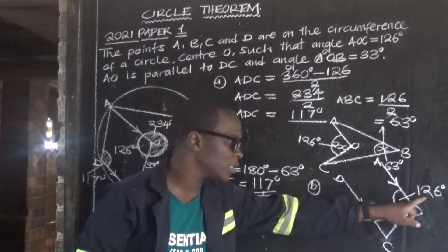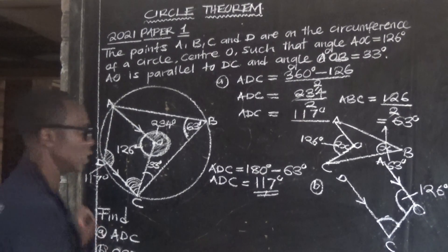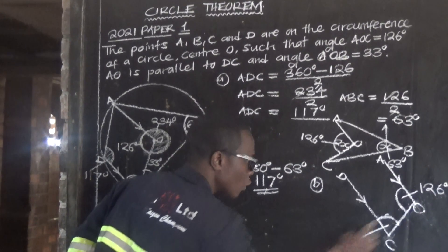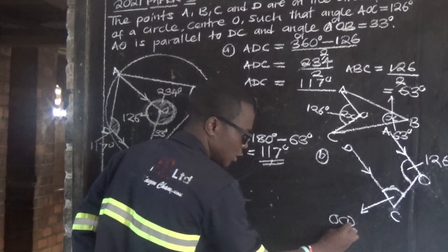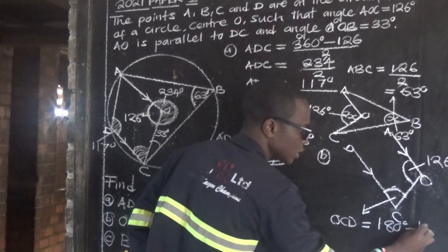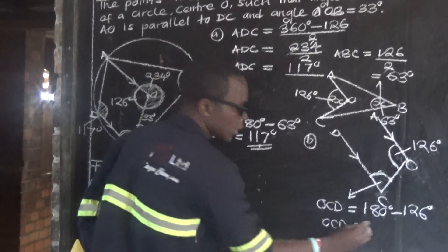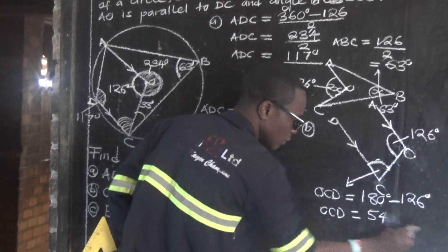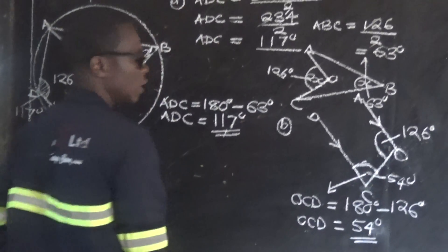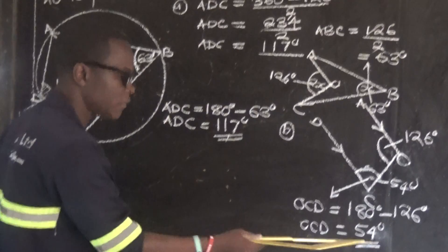So out of 180, we have 126. We can easily find angle OCD. Angle OCD equals 180 minus 126 equals 54 degrees. So angle OCD is equal to 54 degrees. That is the answer for question B.